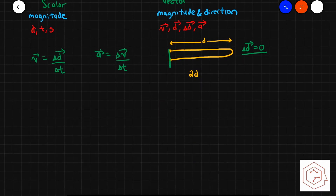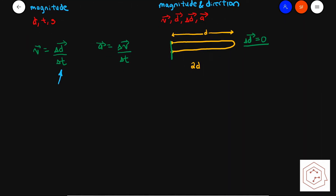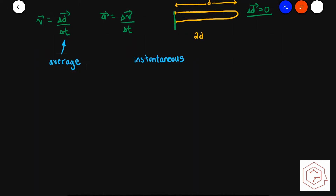There's a change in time, which means this is an average. However, there are also instantaneous measurements. An average is a measurement taken over a certain time interval, such as the definitions given here, whereas instantaneous would be a measurement at a specific point in time. This relates to the secant of a graph, whereas instantaneous relates to the tangent.